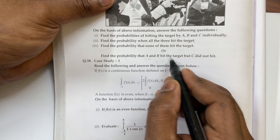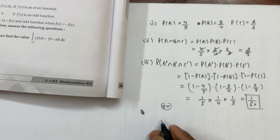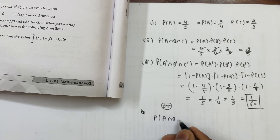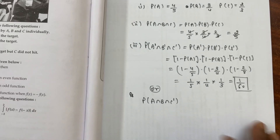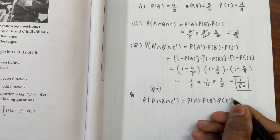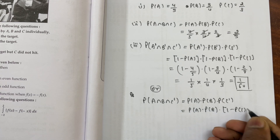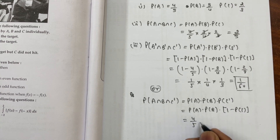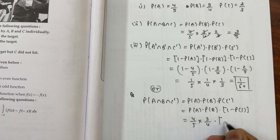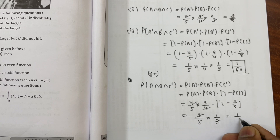Fourth part: Find the probability that A and B hit the target but C did not hit. This equals probability of A into probability of B into probability of C dash, which is 1 minus probability of C. So that is 4 by 5 into 3 by 4 into 1 minus 2 by 3, giving us 1 by 5.